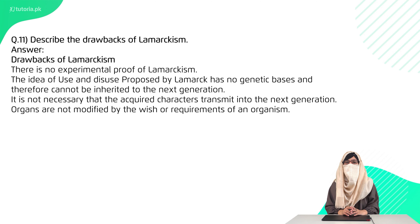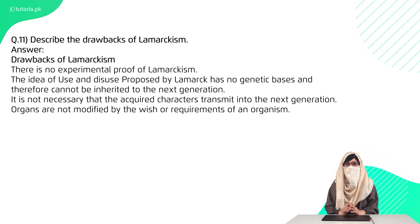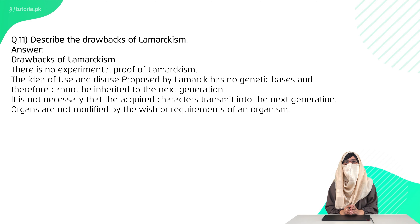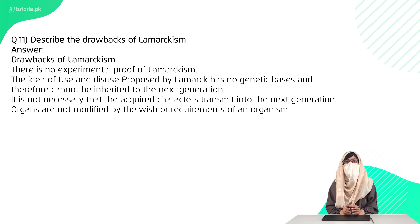Question 11 is: describe the drawbacks of Lamarckism. The most important thing to remember is that Lamarckism had no genetic basis. If you have any modification of an organ, that requires a change in genetics or genes. Without that, the modification will not be transferred to the next offspring or population.